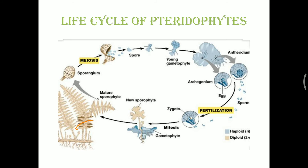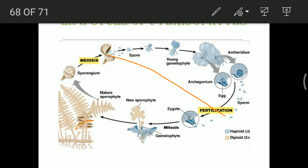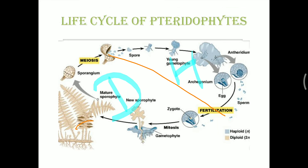This entire pteridophyte life cycle is an example of haplodiplontic type of life cycle, because we see a haploid structure formed after spore release that continues until the release of egg and sperm. So from spore release to gamete release is haploid. The haploid structure is shown in blue and the diploid structure in cream color. Because both diploid and haploid structures are present together, we say the life cycle of pteridophytes is haplodiplontic.